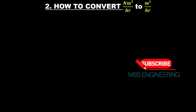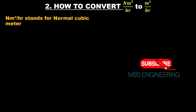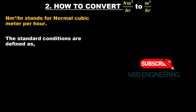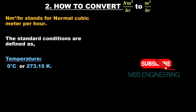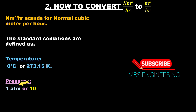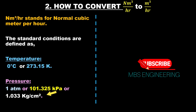We will now learn how to convert normal cubic meters per hour to cubic meters per hour. The standard conditions are: temperature of 0 degrees Celsius or 273.15 Kelvin, and pressure of 1 atmospheric pressure or 101.325 kilopascals or 1.033 kilograms per centimeter square.